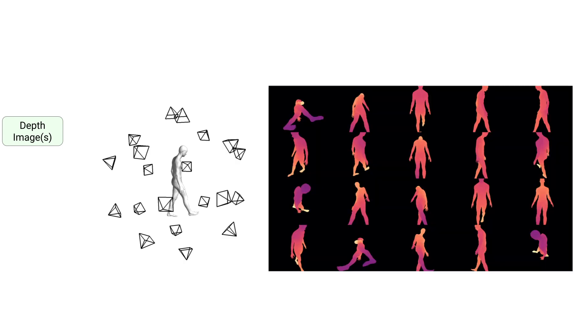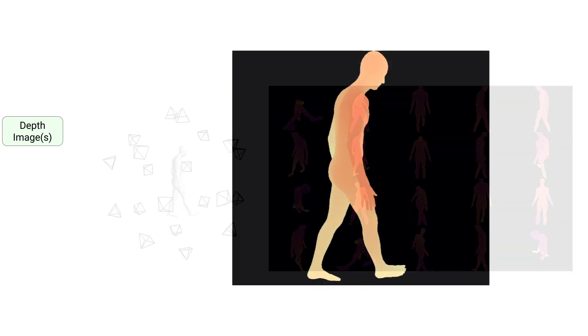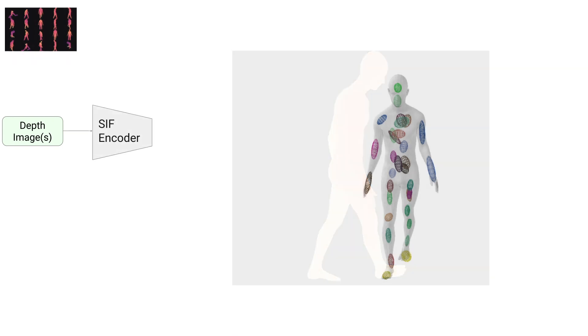Our system takes one or more depth images with known cameras as input. These may come from an input mesh, in which case we render a stack of depth images, or be a single observation. The first step of our pipeline is to predict a SIF template using a CNN. The SIF template defines the core structure of our reconstruction, but not the fine details.